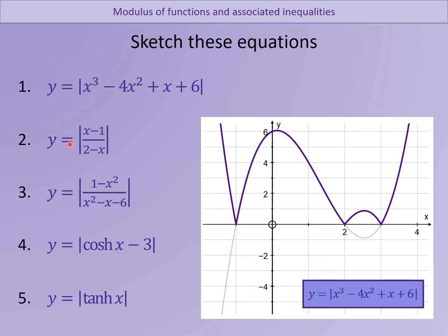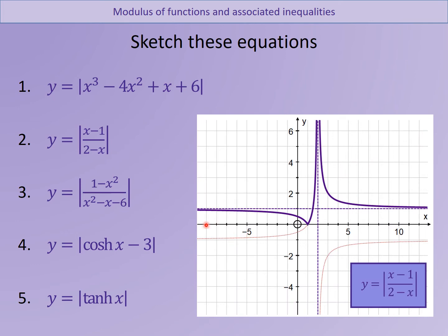Hopefully you used your year one normal maths skills, thought about what this graph looks like, and you should have found it was this sort of rational function graph. So therefore anything negative goes to positive, so it was there and there, and you end up with this blue graph like this. Well done - noticing some changes about the asymptotes, which we'll come back to later.